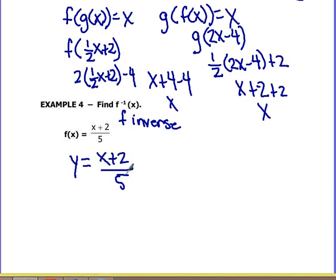the inverse means we have to switch the letters, not the numbers. x equals y plus 2 over 5. And we want to get y by itself. So what I would do is take 5 times on both sides to cancel out the 5.